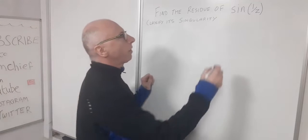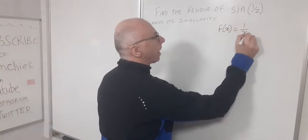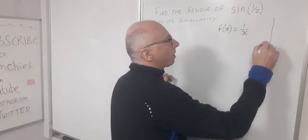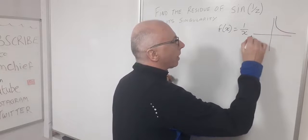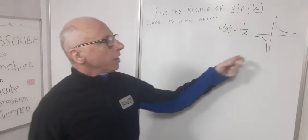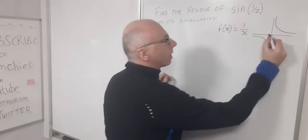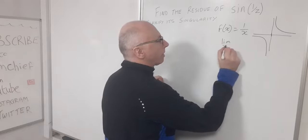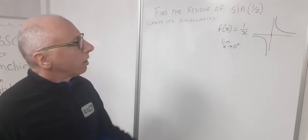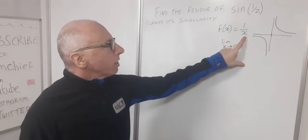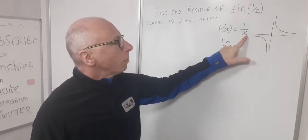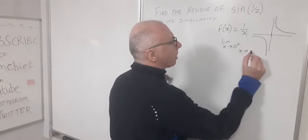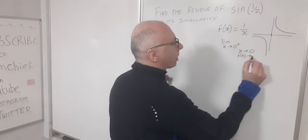First, let's have a look at the graph of f(x) = 1/x — essentially the input for our sine function in real terms. The graph behaves with an asymptote at zero. The limit as x approaches zero from the positive side: as x gets increasingly small, f(x) approaches positive infinity.